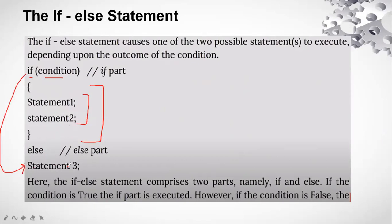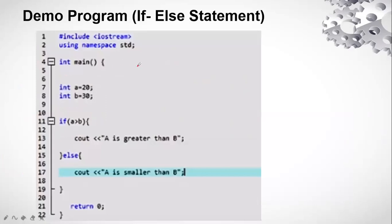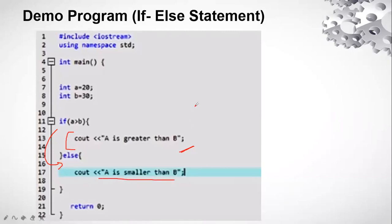In the if-else demo, up to the condition 'if a is greater than b' — if true, it prints 'a is greater than b'; if false, it prints 'a is smaller than b'. Here a is 20 and b is 30, so a is not greater than b, making the condition false. It jumps to the else statement, ignoring the if block, and the console prints 'a is smaller than b.' Then it returns zero and closes.